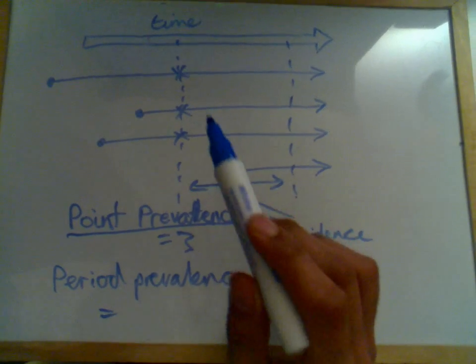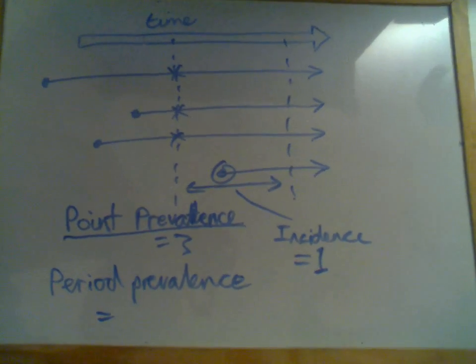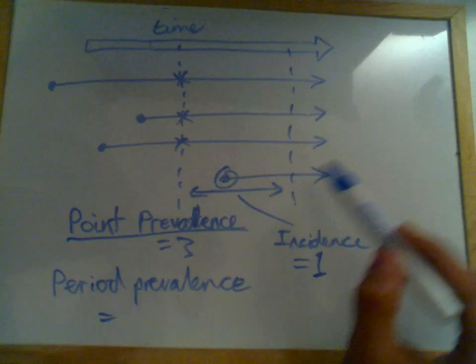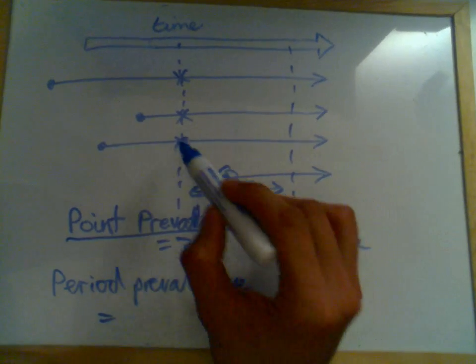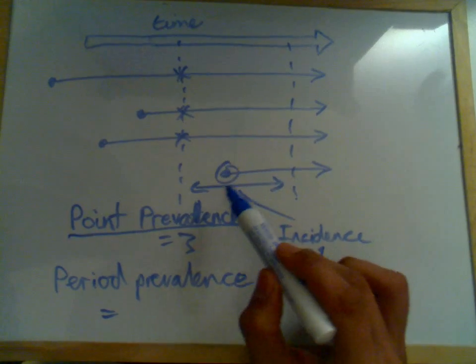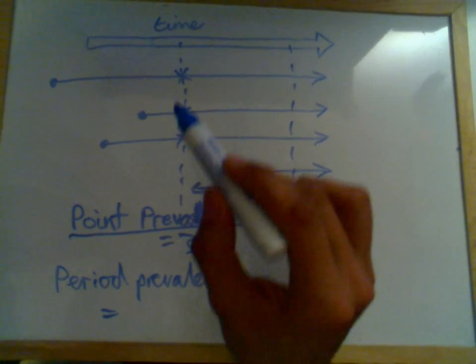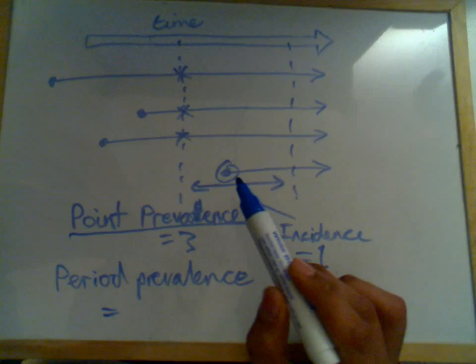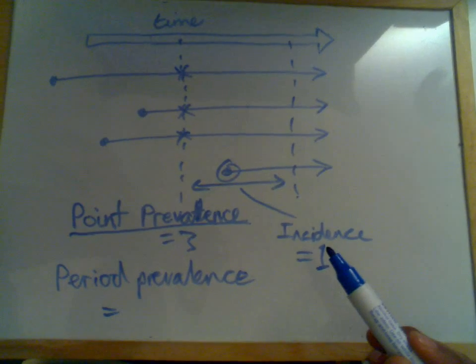Now I'll give you examples. Going back now to point prevalence. Point prevalence may be, say, people who have diabetes. So let's just say we were looking for diabetes here. And three people had diabetes, and then we have one new case of diabetes. So our prevalence of diabetes was three. Our incidence was one.